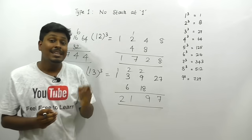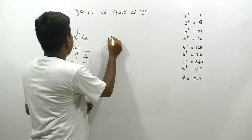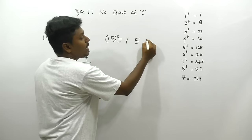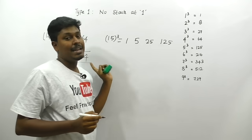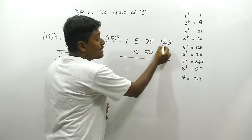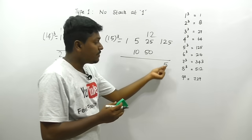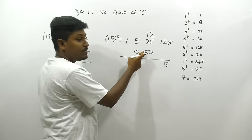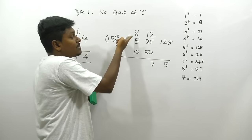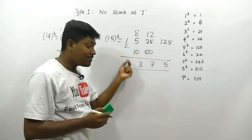For 15³: write 1, 5, then 5² = 25, then 5³ = 125. Double the center numbers: double 5 = 10, double 25 = 50. Adding: 125 → write 5, carry 12; 12+25+50=87 → write 7, carry 8; 10+8=18 → write 8, carry 1; 1+1=2. But wait — 50+25=75, 75+12=87, write 7 carry 8; 10+8=18, write 8 carry 1; 1+1=2. Actually 3, 3, 7, 5 — so 15³ = 3375.